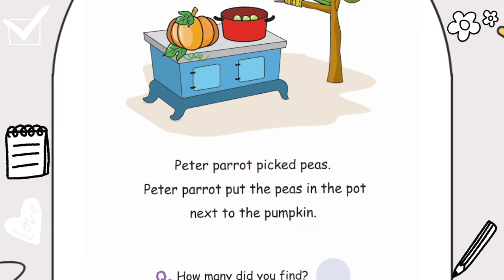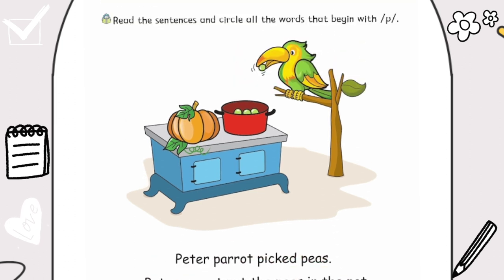Let's go to the picture. What is the green and yellow bird? Yes, it is called a parrot. P-P-Parrot. And what does the parrot have in its mouth? Yes, it is a P-P-Pea. Awesome.